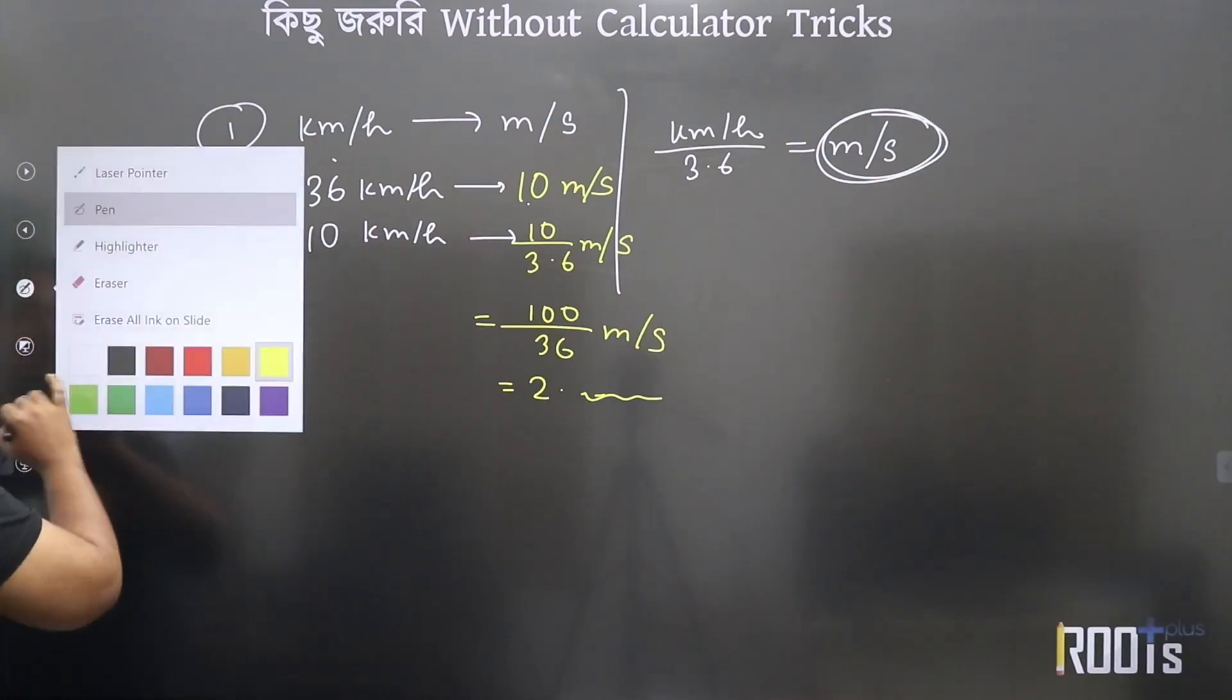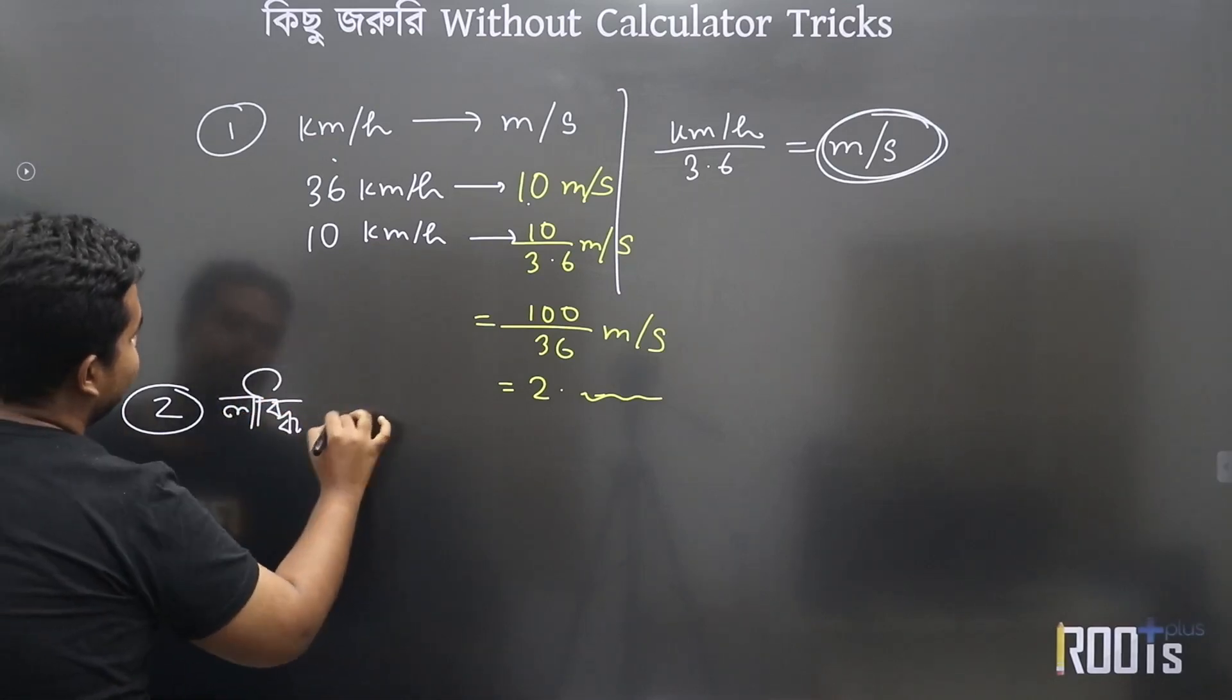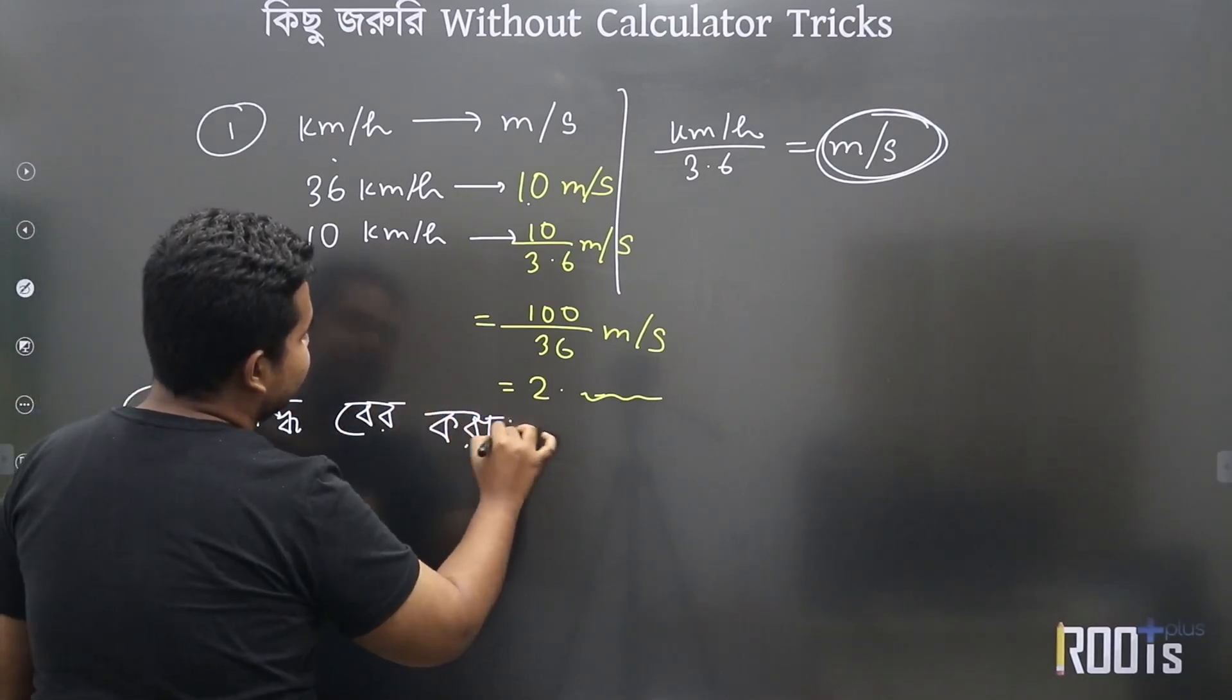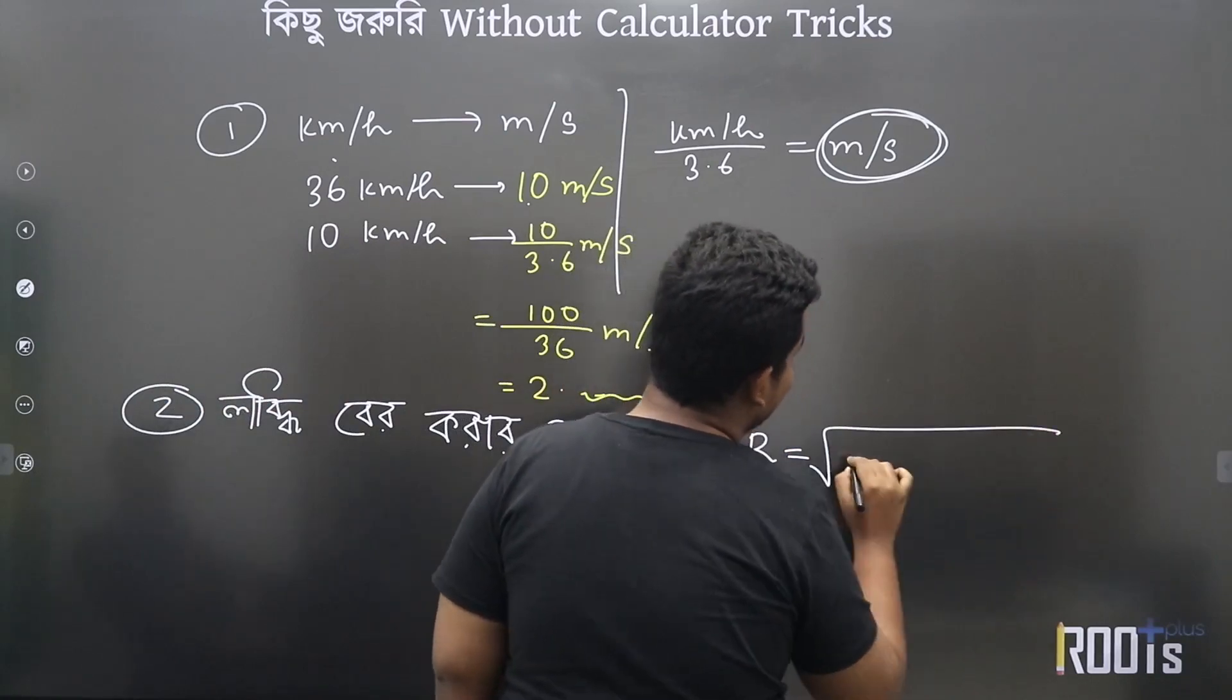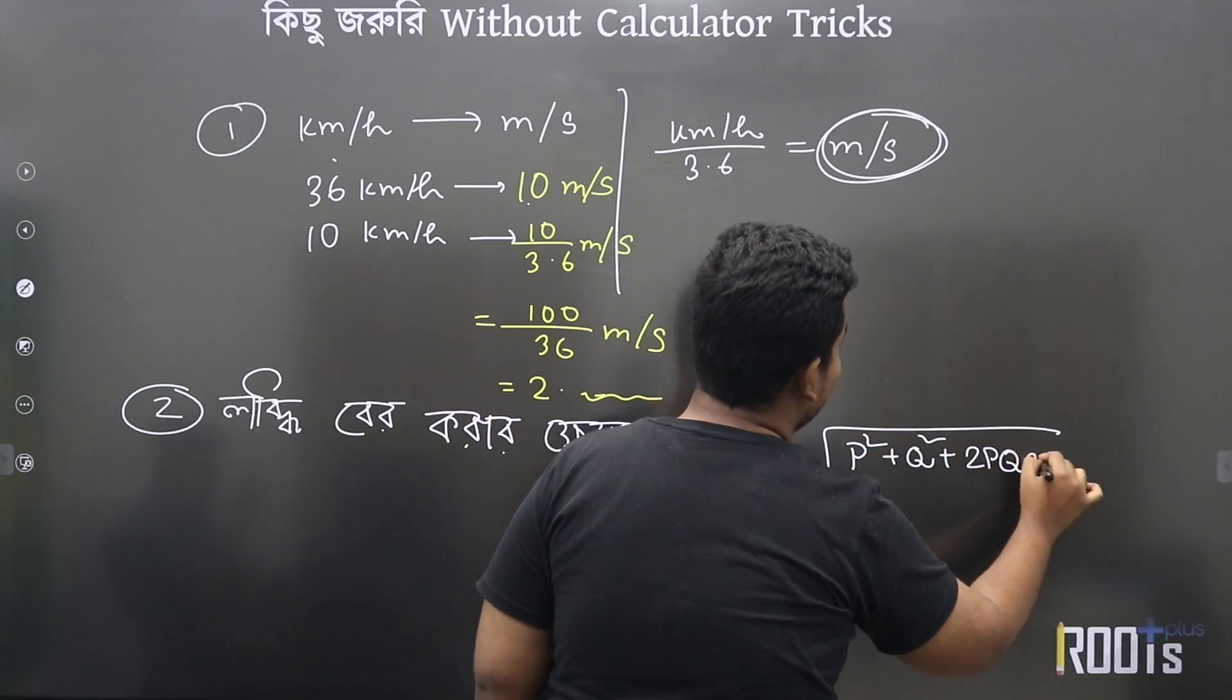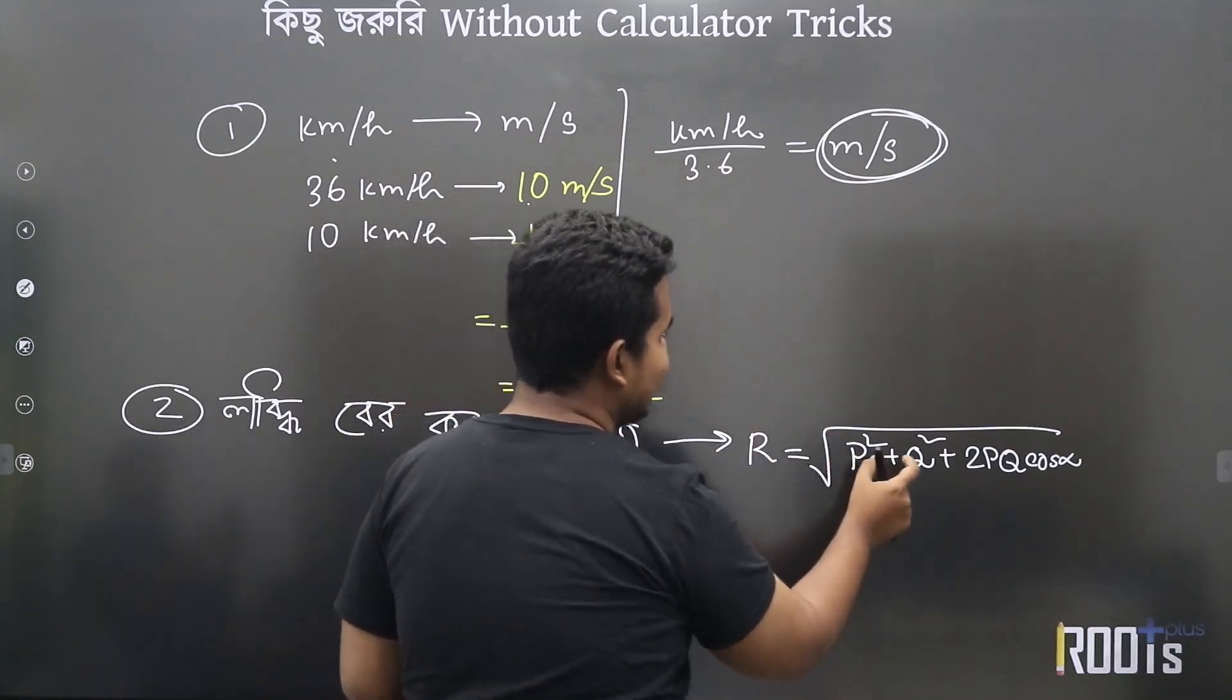Now, the second thing I'll show you is about the resultant of vector addition. The formula is: r equals root of p square plus q square plus 2pq cos alpha. Okay? And when we apply this formula, we need four values: r, p, q, and alpha. Okay?